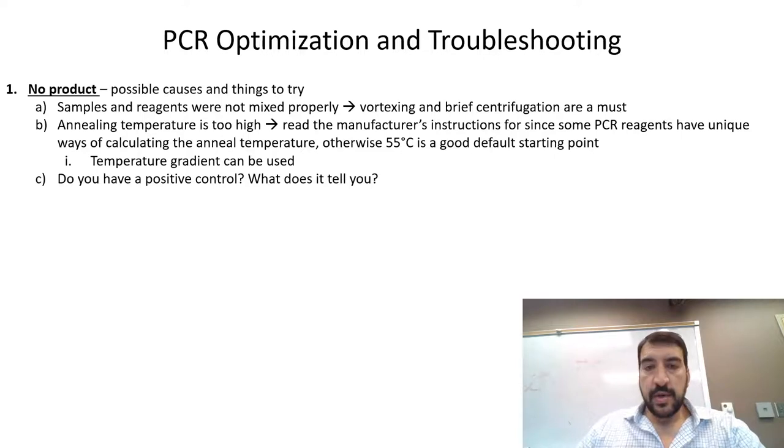Do you have a positive control, and if so, what does that tell you? If you're doing cloning, perhaps you're amplifying something for the first time, and you may not have a positive control for that target. But for other assays like genotyping or something similar, you may have a positive control. Positive control can easily tell you whether your reagents are going bad or your template is no longer good.